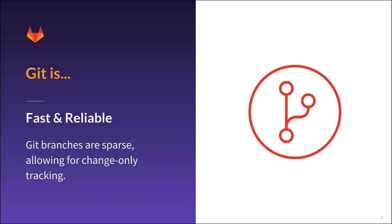Git is the choice for modern teams because of its fast, reliable architecture. All changes are tracked and can be easily audited, corrected, or reverted. Collaboration is central to the core of Git, and it is the way that the most effective knowledge workers manage their work.